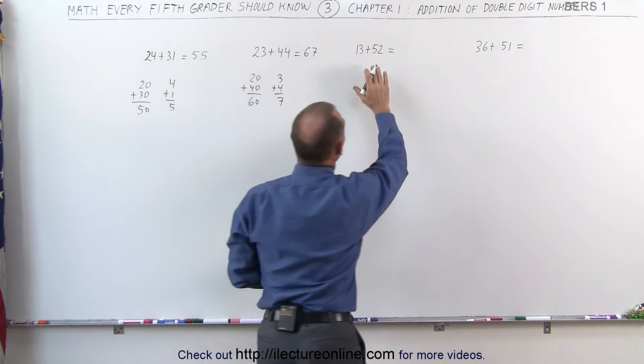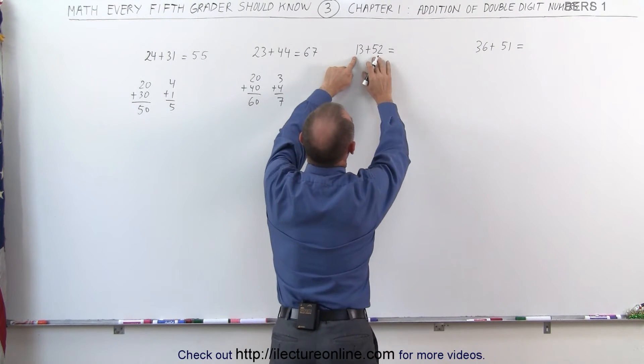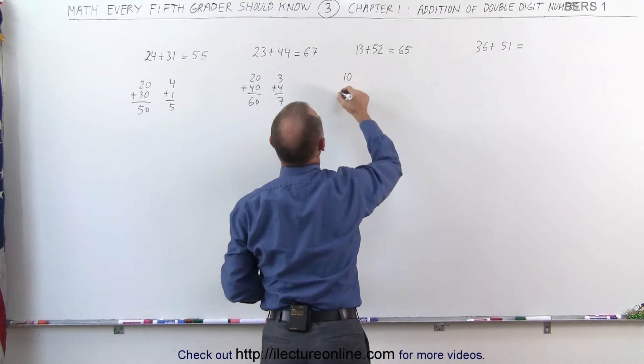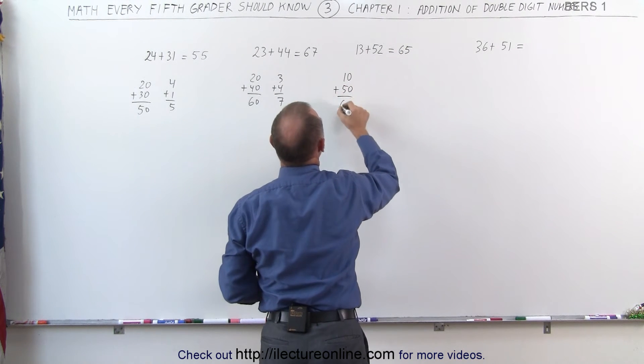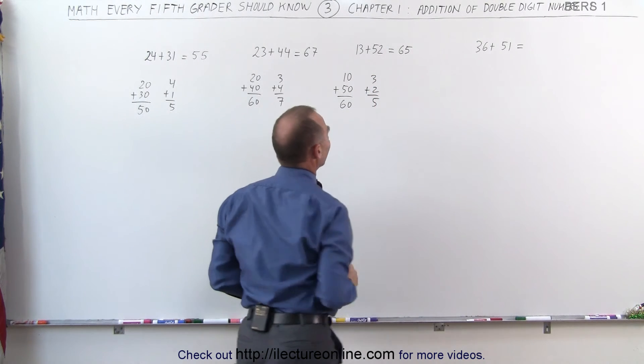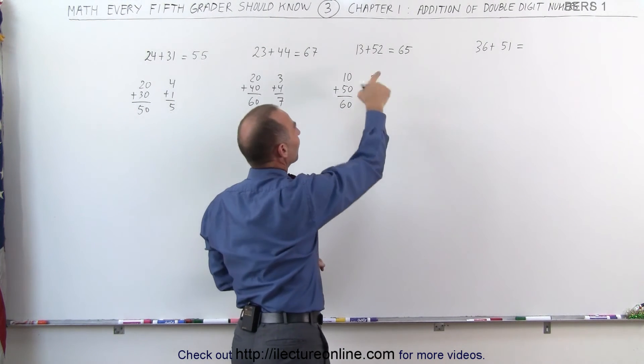The next exercise here, we have 1 plus 5, which is 6. 3 plus 2, which is 5. What we did was, we added 10 plus 50, which gave us 60. We added 3 plus 2, which gave us 5. 60 plus 5 is 65.